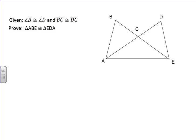You're given that angle B is congruent to angle D, BC congruent to DC. Just kind of to put that information in, that's what it looks like.